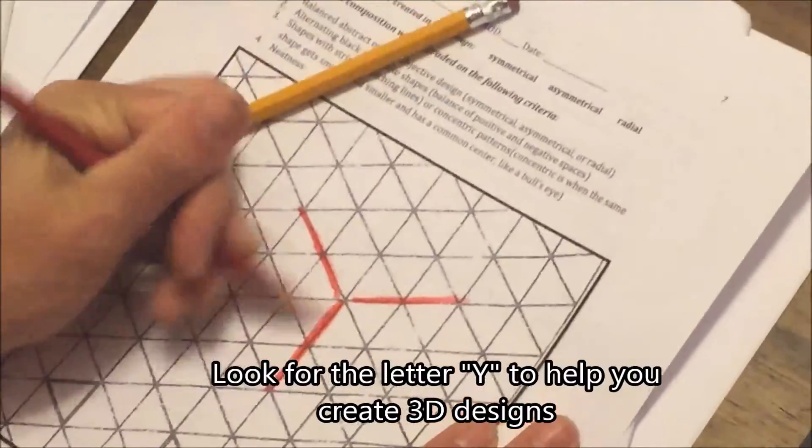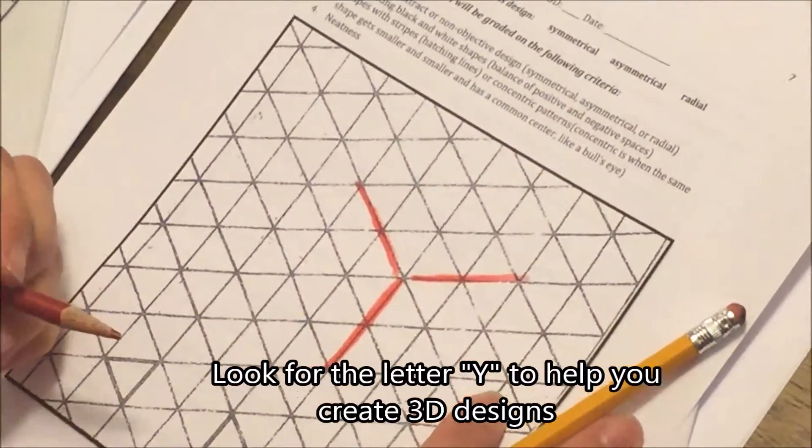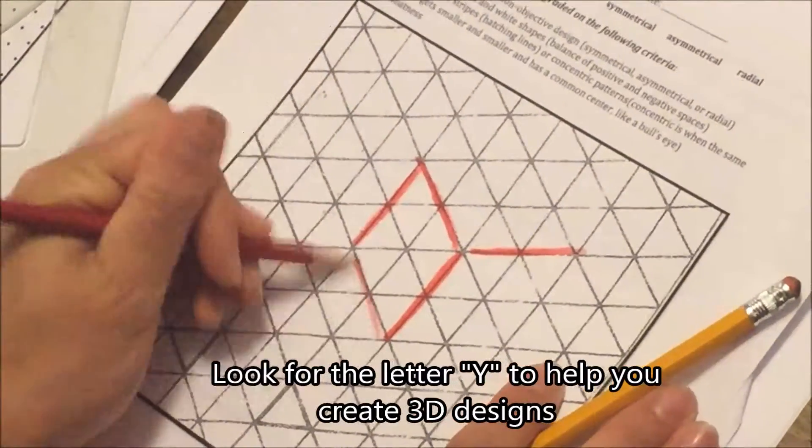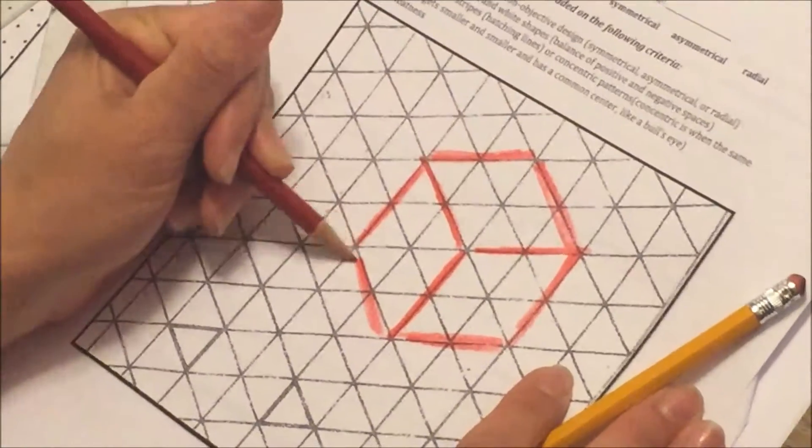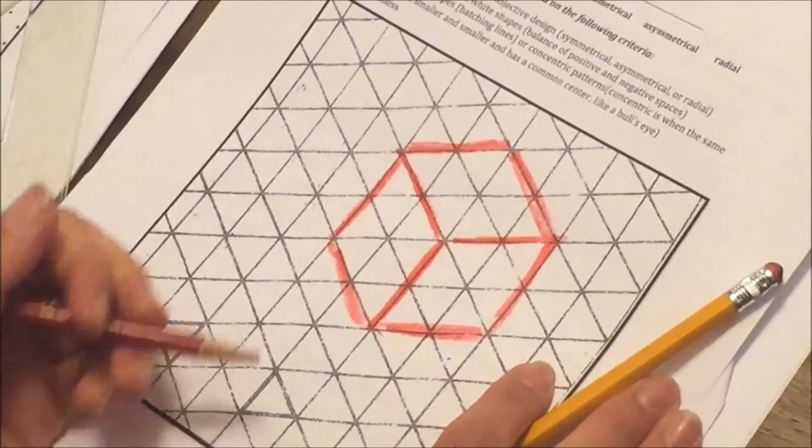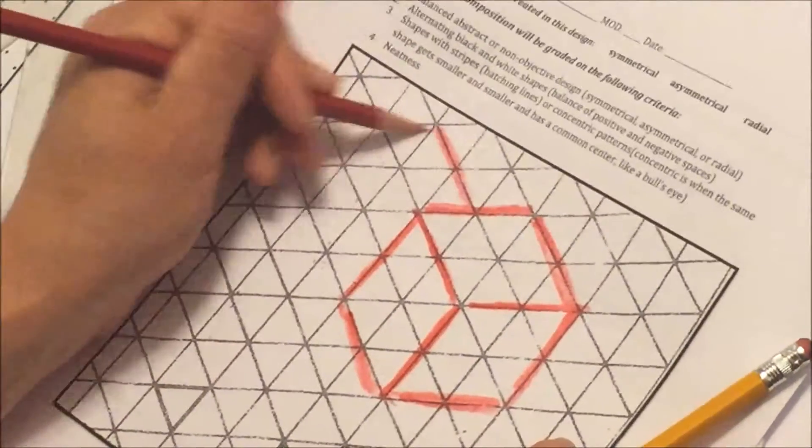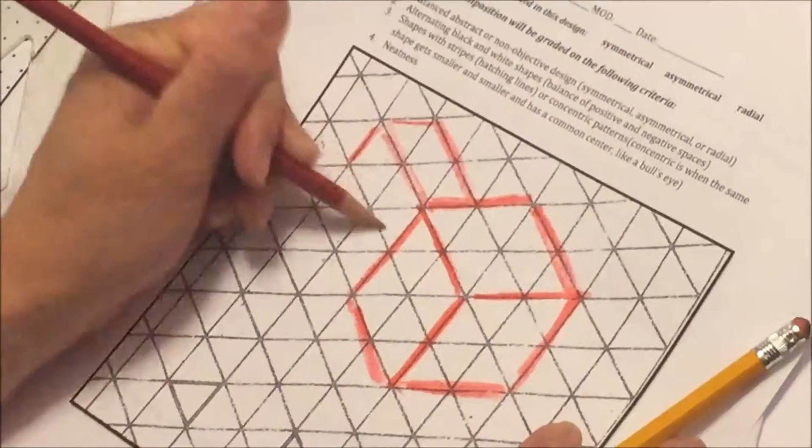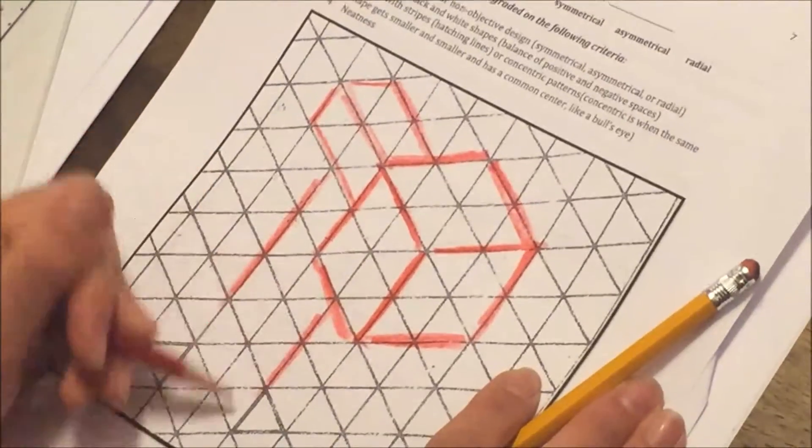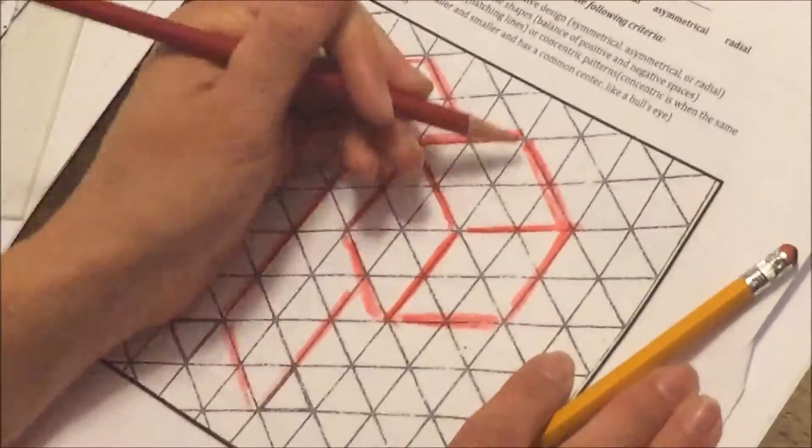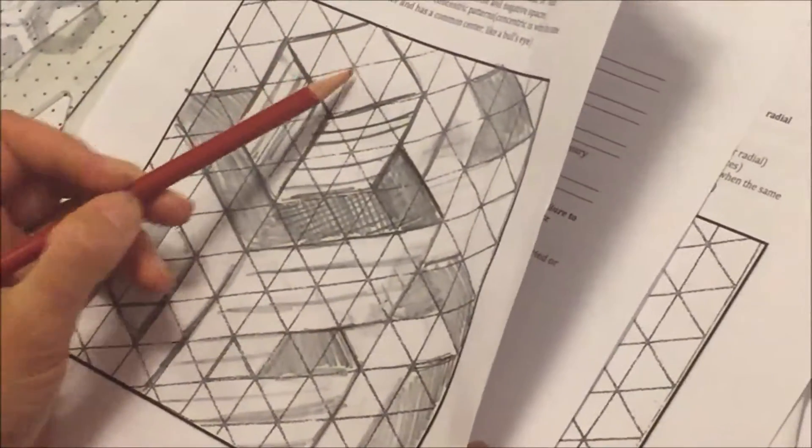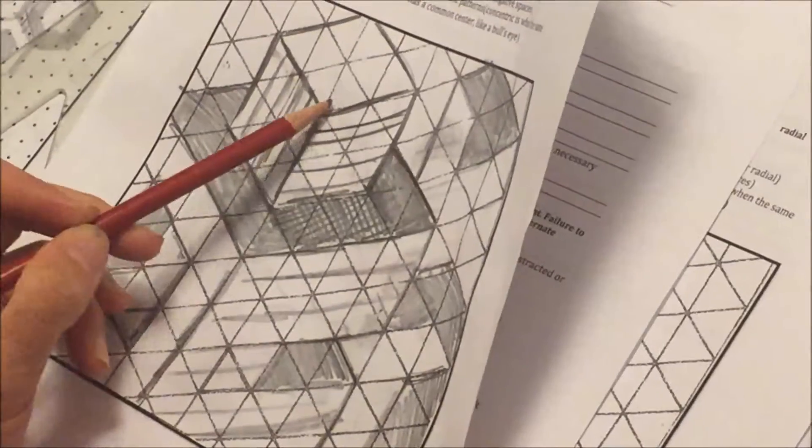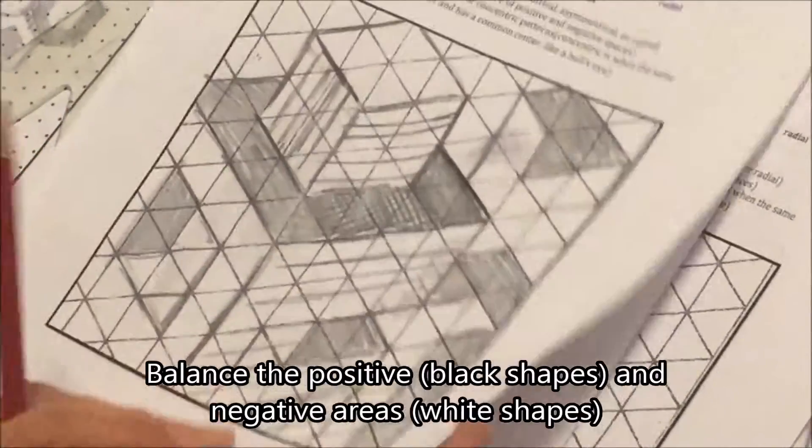There's my Y and now I can find the rest of the sides of the box with the corner facing me and I can start figuring out how I want to make a much more interesting 3D design. After you get the hang of this, if you decide to continue on this paper, remember you will need to go back and balance the positive and negative spaces by coloring in some black shapes, some should have stripes, and some should have white areas.